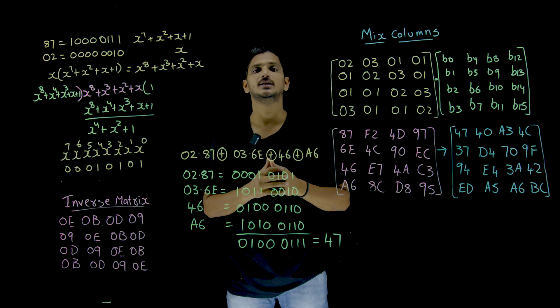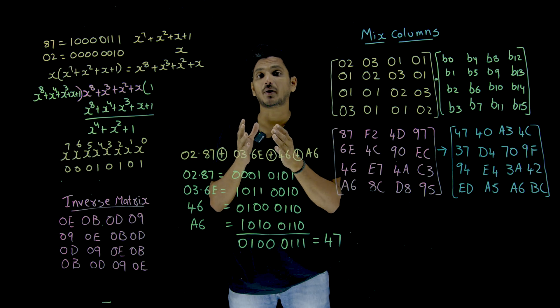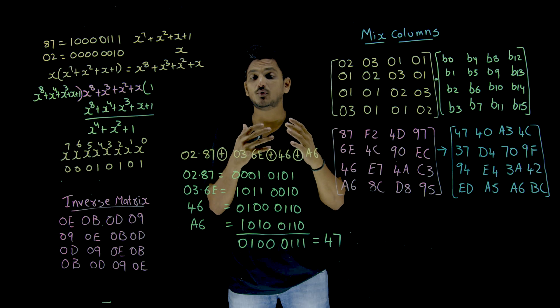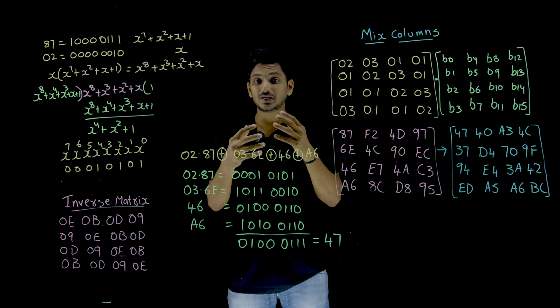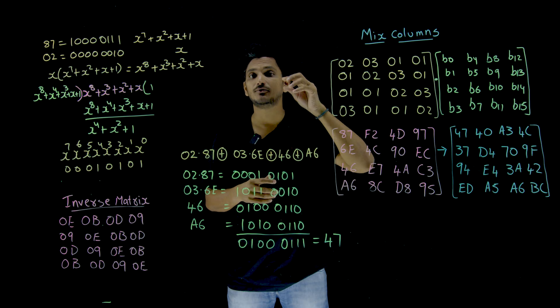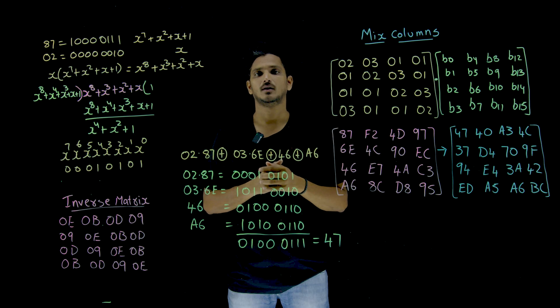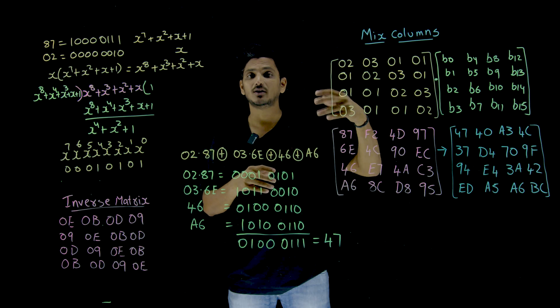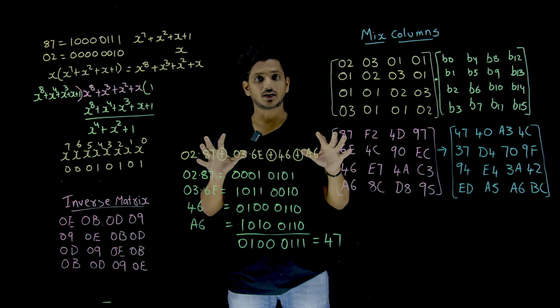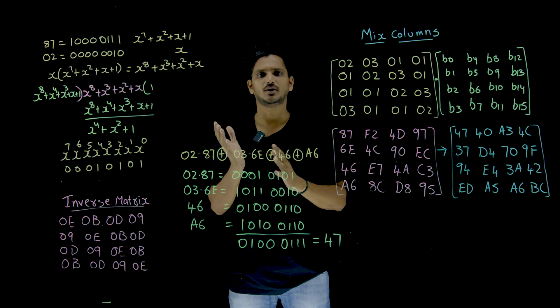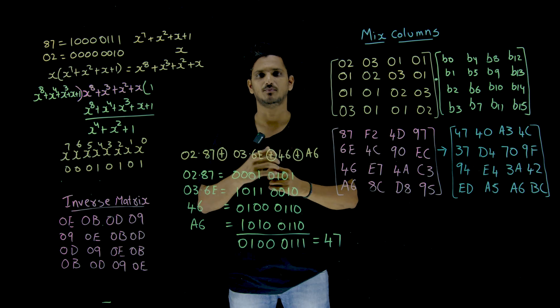In our last class we discussed that Substitution Byte, that is Byte Level Substitution. But actually we need Bit Level Substitution. Bit Level Mixing should be needed in order to provide Confusion and Diffusion. So that Bit Level Mixing is done here to provide the Confusion and Diffusion because of Bit Level Mixing.